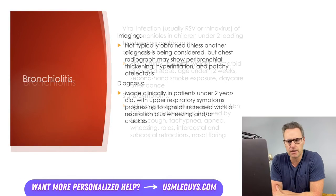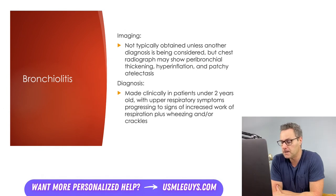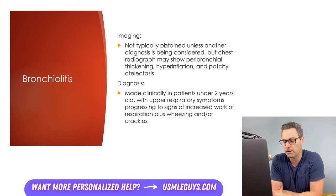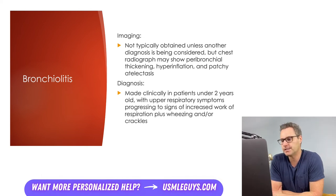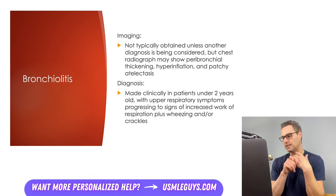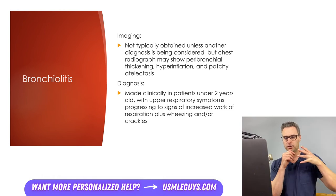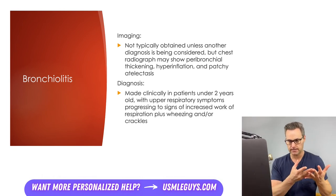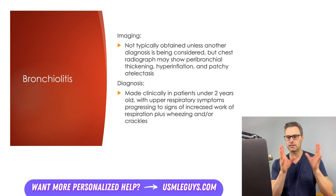Imaging is typically not obtained unless other diagnoses are being considered, but chest radiographs may show peribronchial thickening, hyperinflation, and patchy atelectasis from mucus plugging. Some institutions perform molecular analysis to identify the specific viral cause, though it's not necessary for diagnosis — it's typically used to avoid unnecessary antibiotic use. Diagnosis is made clinically without labs or imaging when a patient under two years old presents with upper respiratory symptoms that progress to lower respiratory tract symptoms such as tachypnea, retractions, wheezing, and crackles.